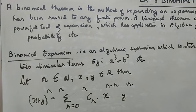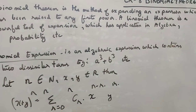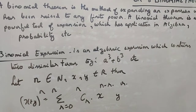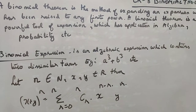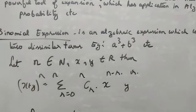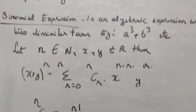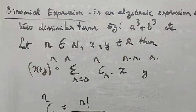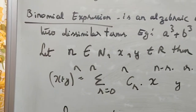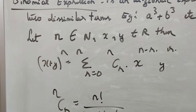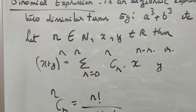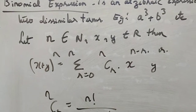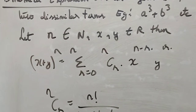Now, what is a binomial expression? It is an algebraic expression which contains two dissimilar terms — for example, a cube plus b cube. Now, let n belong to the natural numbers and x and y belong to real numbers. Then x plus y to the power n equals the summation from r equal to 0 to n of